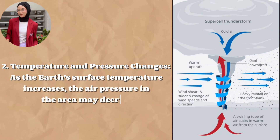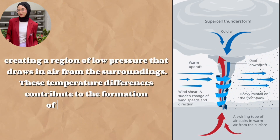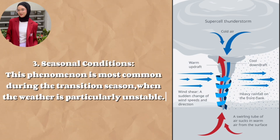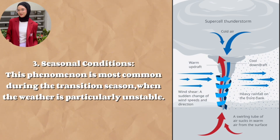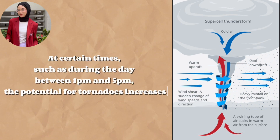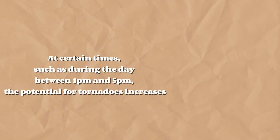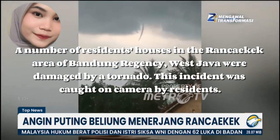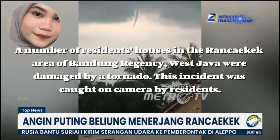Second, temperature and pressure change. As the Earth's surface temperature increases, the air pressure in the area may decrease, creating a region of low pressure drawing in air from the surroundings. This temperature difference contributes to the formation of wind vortices. Third, seasonal conditions. This phenomenon is most common during the transition season, when the weather is particularly unstable. At certain times, such as during the day between 1 PM and 5 PM, the potential for tornadoes increases.